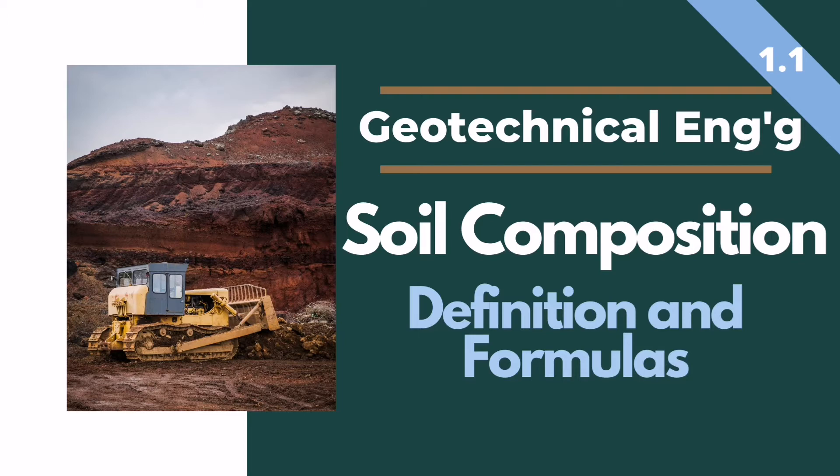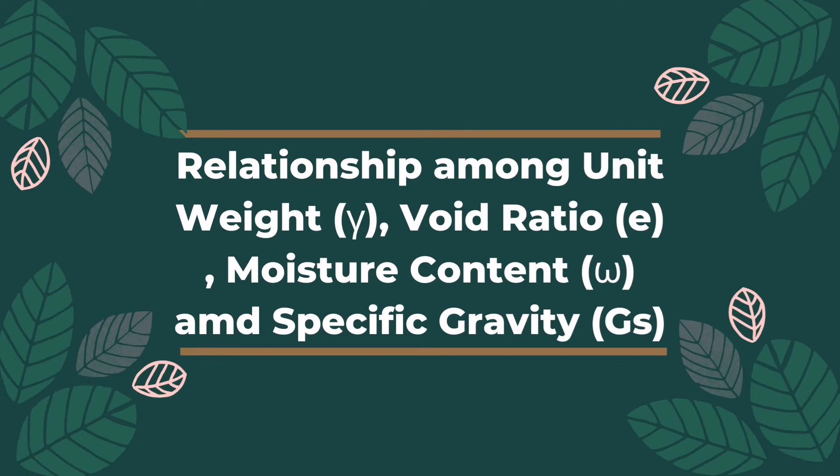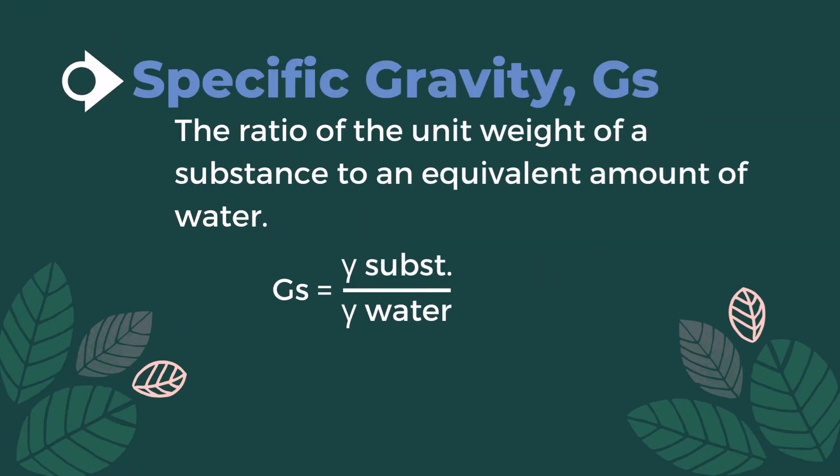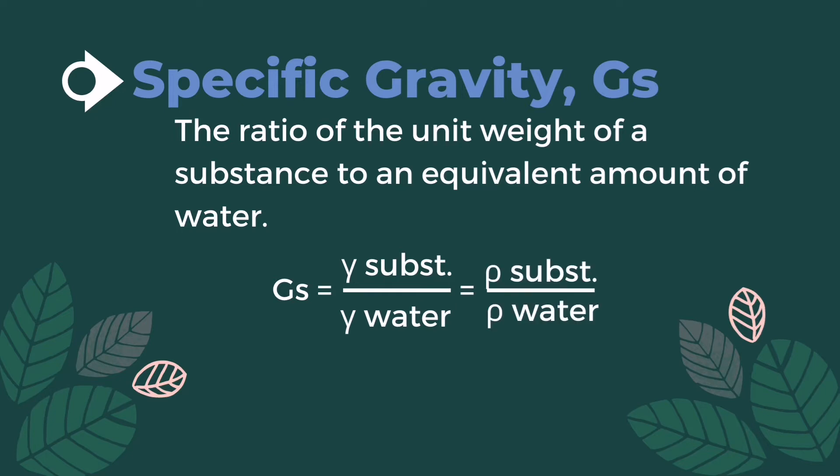Relationship among unit weight, void ratio, moisture content, and specific gravity. Specific gravity G sub S is the ratio of the unit weight of a substance to an equivalent amount of water. Specific gravity is equal to gamma substance divided by gamma of water, and is also equal to the density of the substance divided by the density of water.